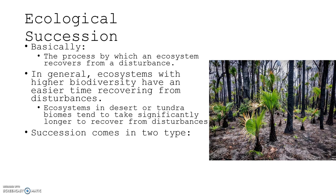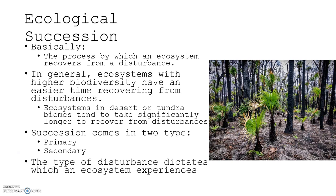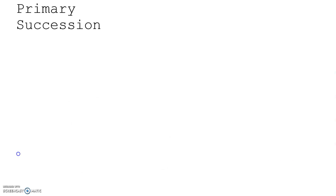Succession can come in two types: primary and secondary. This is an important part for the AP Environmental Science Test. The type of disturbance dictates which an ecosystem experiences. Let's look at primary succession first.